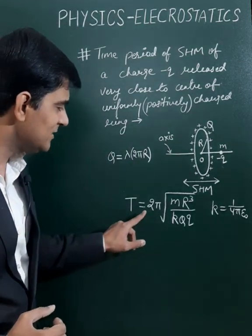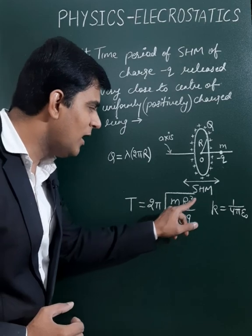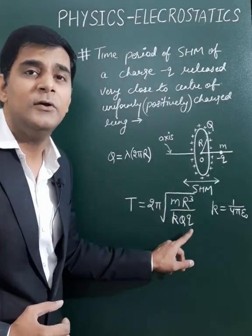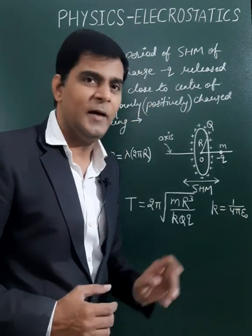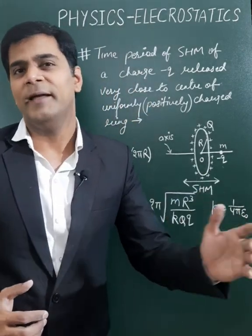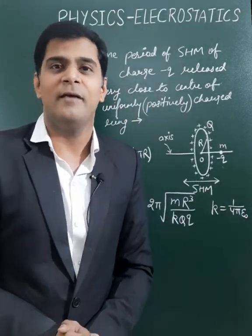This time period is given as 2π times the square root of (mR³ / KQq), where K is 1 over 4π epsilon naught, having value 9 times 10 to the power 9 for air and vacuum.